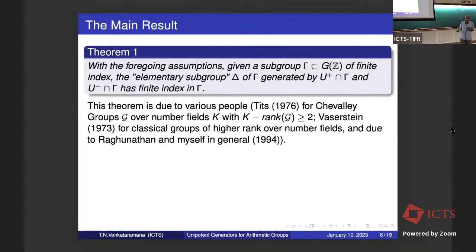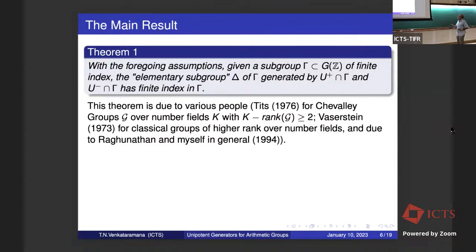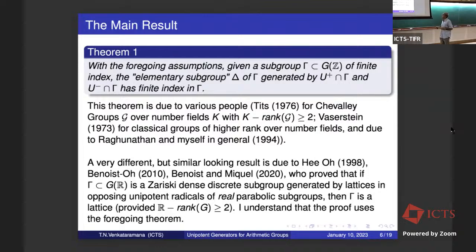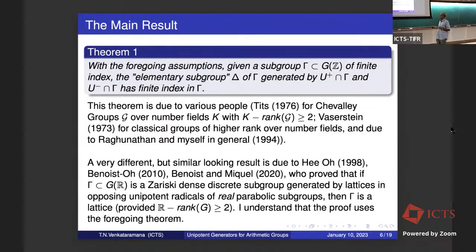Vasserstein had announced a proof for classical groups of higher rank — that is, K-rank at least two over number fields — but I have not seen his proof because it was a research announcement, and I don't know if it was eventually published. He said that for higher rank groups, this elementary subgroup is arithmetic. In general, this result is due to Raghunathan and myself; we did some complementary cases.